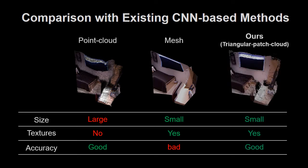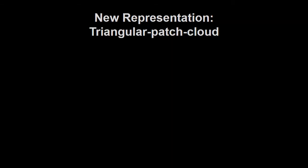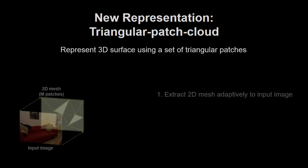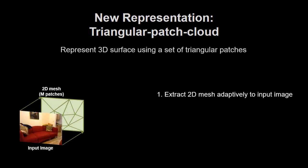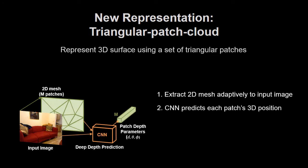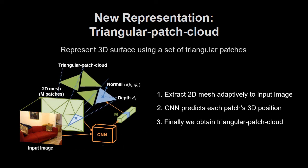Now we present a new mesh representation that overcomes all of these problems — that is, Triangular Patch Cloud, composed of triangular patches. For the construction of this Triangular Patch Cloud, we first extract a 2D mesh adaptively to the input image and separate all the faces of the 2D mesh, then predict the 3D position of each face by CNN. Finally, we obtain the Triangular Patch Cloud representation from the input image.